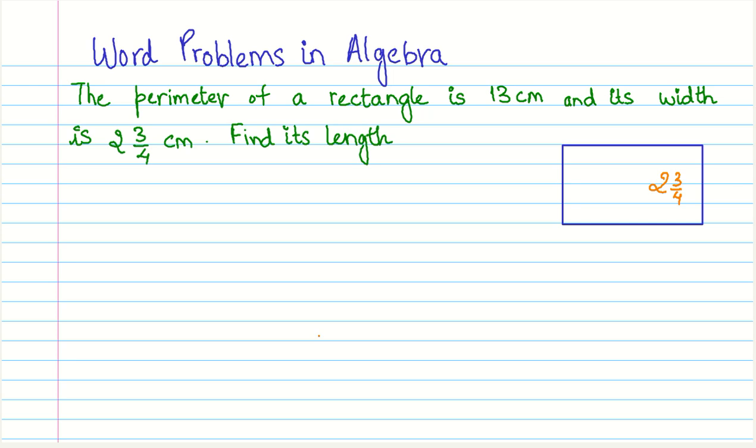Of course, it is a relatively simpler problem than what we will encounter when we go into more details about algebra. Now, let's get right into the problem. The problem says the perimeter of a rectangle is 13 centimeters and its width is 2 and 3 fourths centimeter. Find its length.